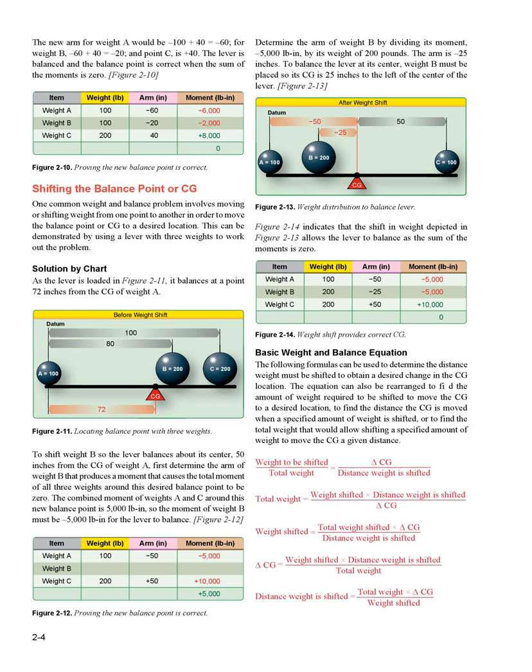The new arm for weight A is −100 + 40 = −60; for weight B, −60 + 40 = −20; and point C is +40. The lever is balanced and the balance point is correct when the sum of the moments is zero, as shown in figure 2-10.